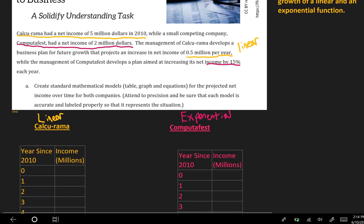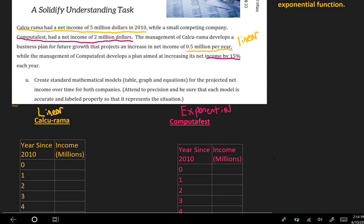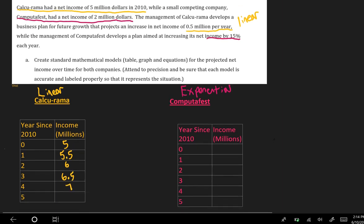Let's fill in that table. In the years since 2010, well in 2010 it told us in the first sentence they had $5 million. So then it's going to be $5.5 million, then $6 million, then $6.5 million, then $7 million, and then $7.5 million.